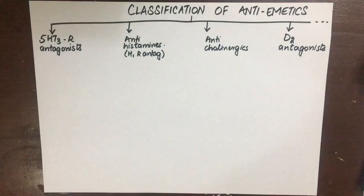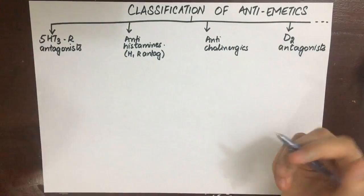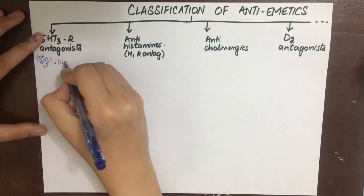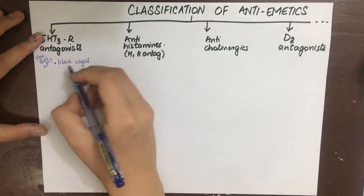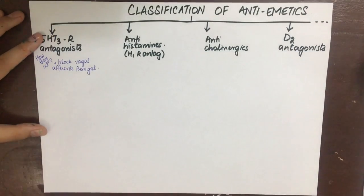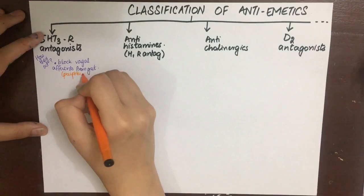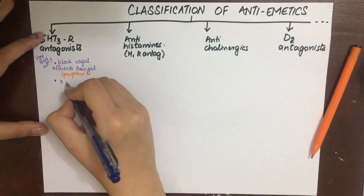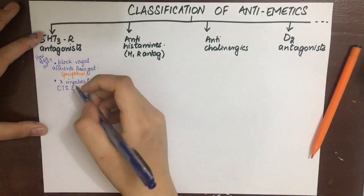First, 5-HT3 receptor antagonists. How they act is they block the vagal efferents from the gut to the NTS and then to the vomiting center—that is their peripheral action. Secondly, they block the impulses to nucleus tractus solitarius and CTZ—that is their central action.